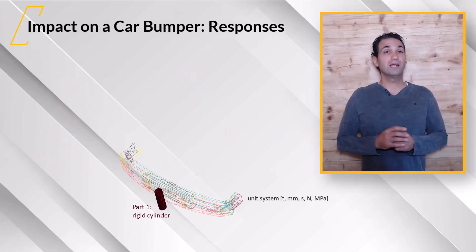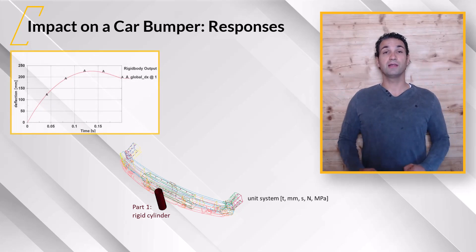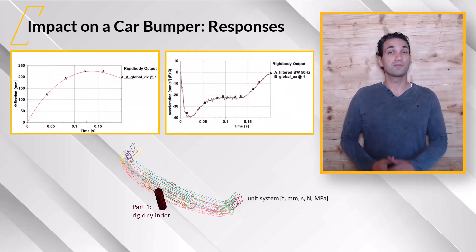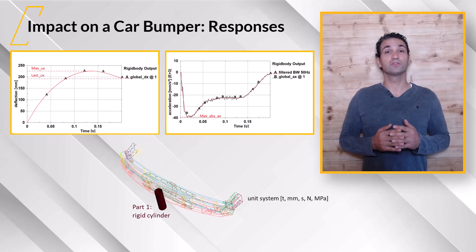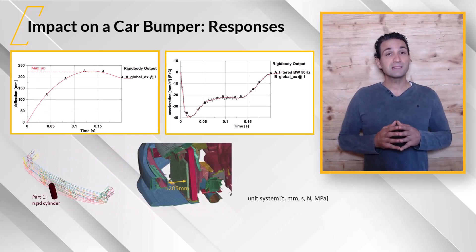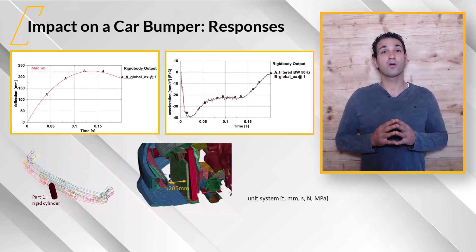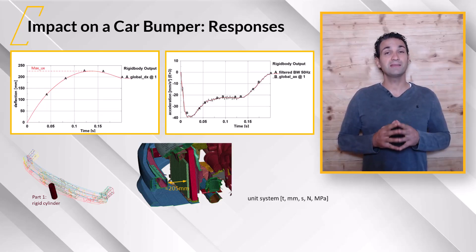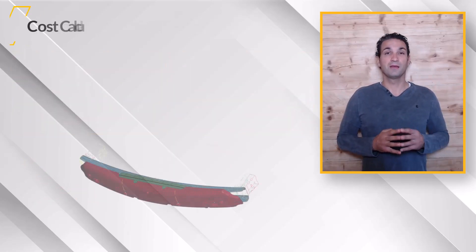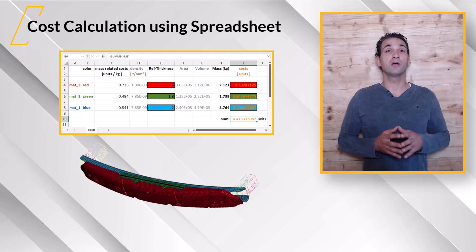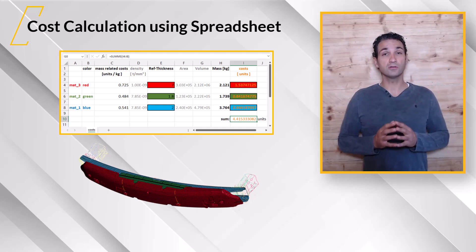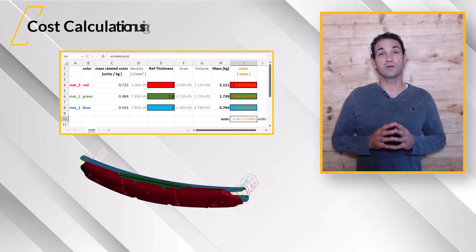As simulation results, we will have a look at the bumper deflection and barrier acceleration. From the signals, we will extract the maximum absolute values, and for deflection also the last value, to be able to control that the barrier is already snapping back. Later, we use the maximum deflection as the objective or as a constraint to prevent the bumper hitting other components. The manufacturing costs are calculated using a spreadsheet, which we will integrate into the automated workflow and use the total costs as an optimization objective.